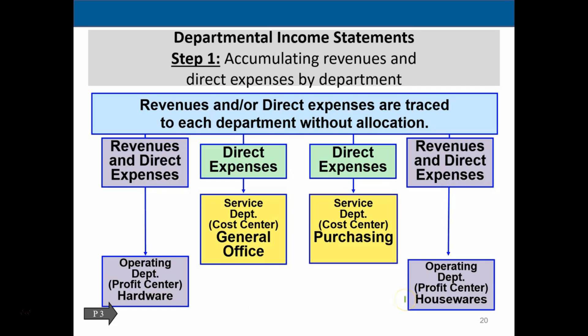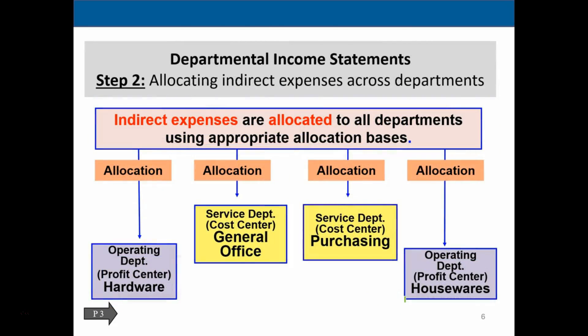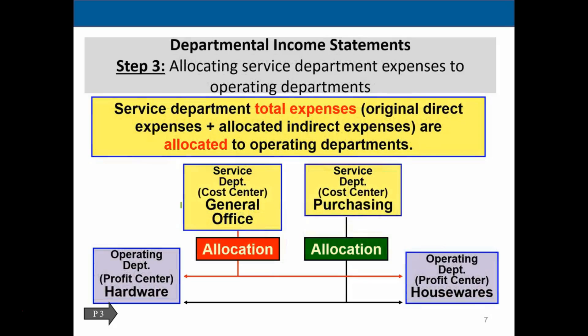In step two of the department income statement, indirect expenses are allocated to all departments using an appropriate allocation basis. Whatever the indirect expenses are — such as maintenance or utilities — we use an allocation method to apply those expenses to the different departments.